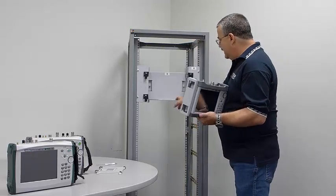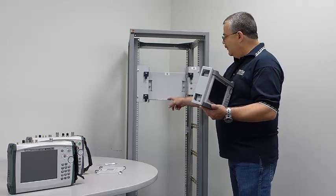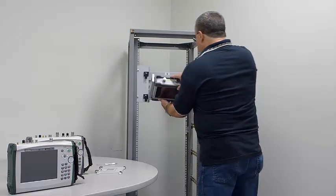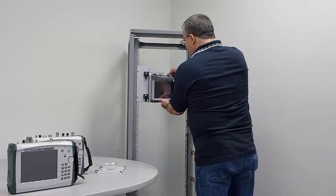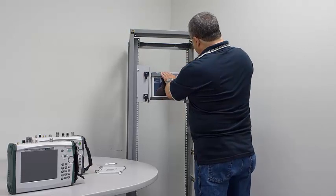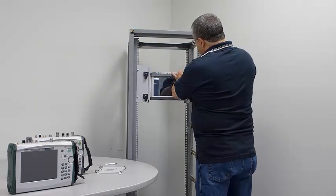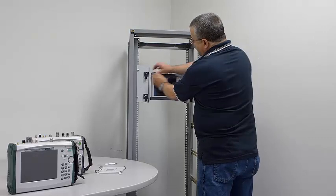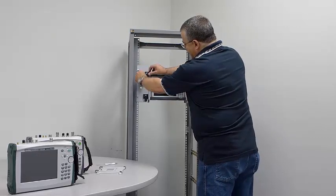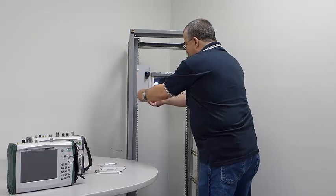The rack mount kit has a shelf at the bottom to support the weight of the instrument. And to install it, you simply put the instrument onto the shelf, tilt it up, loosen these latches, slide them and lock them down one at a time until you have all four latches secured.